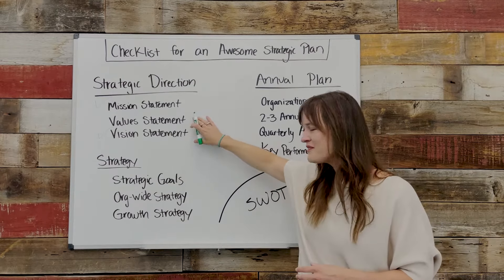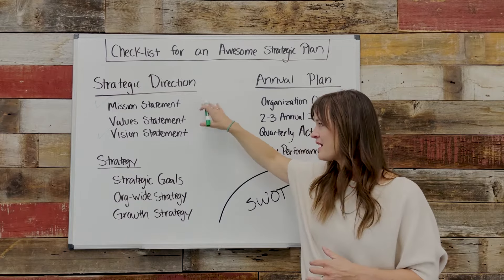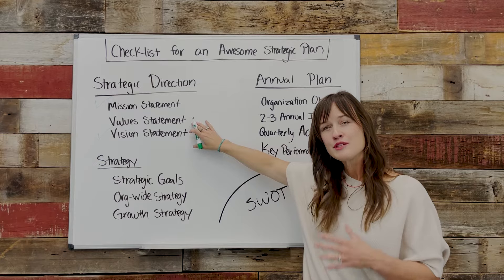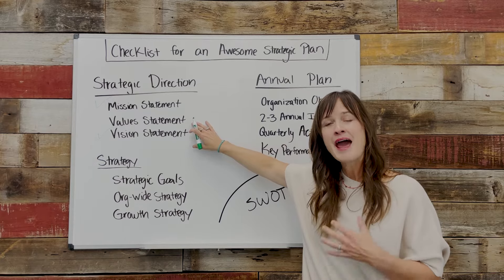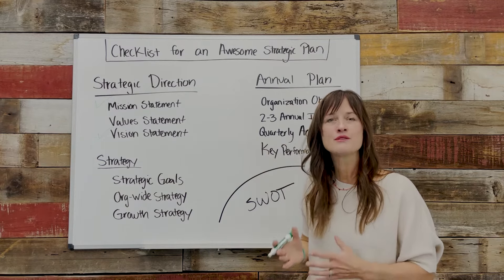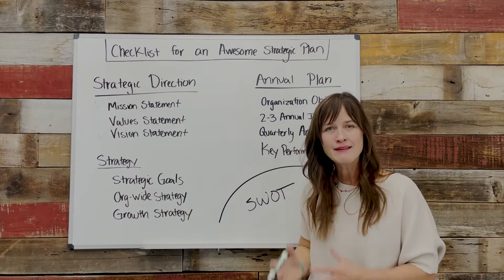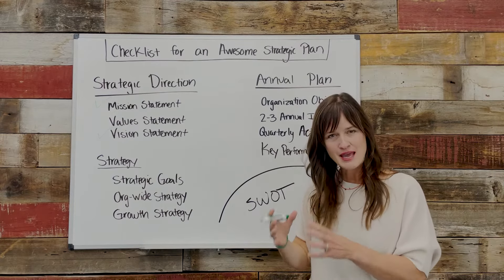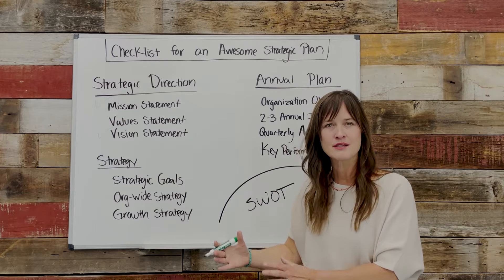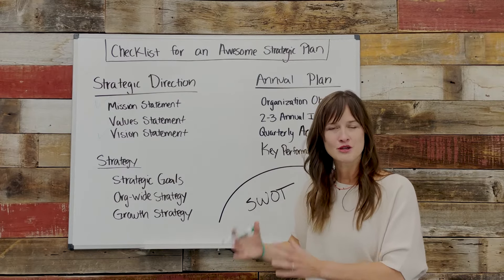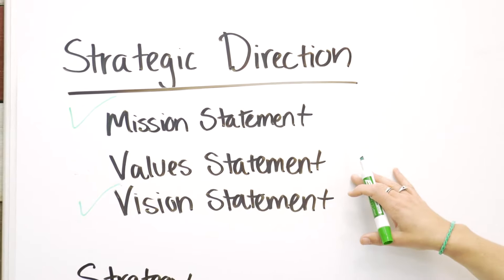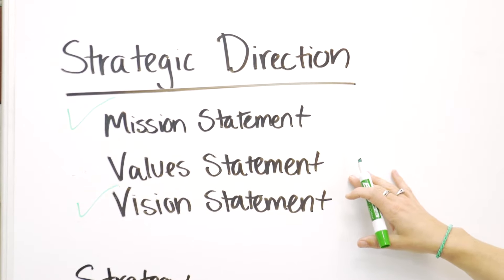We often lump values in this area — mission, vision, values — because it sounds good. But a strategic plan does not have to have values if you don't have them already articulated. I would highly recommend that you run a values process separately from strategic planning, because there's a lot of work there and it deserves its own time and attention. If you have your values, they should go in here; if you don't, put a placeholder.